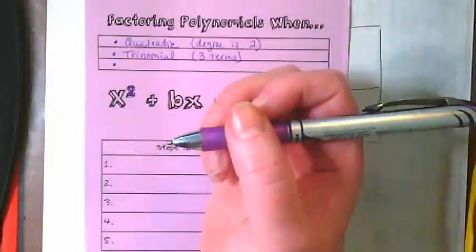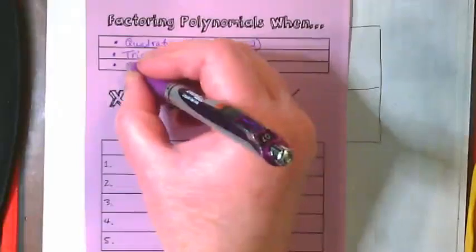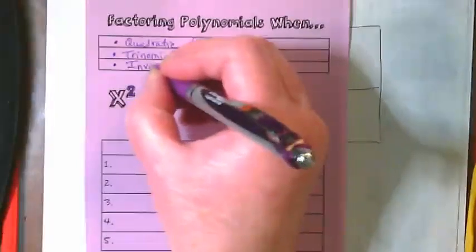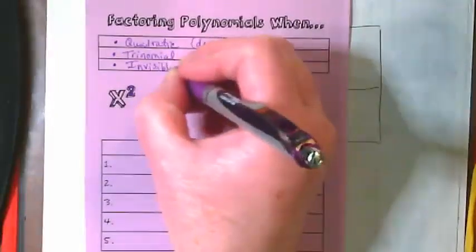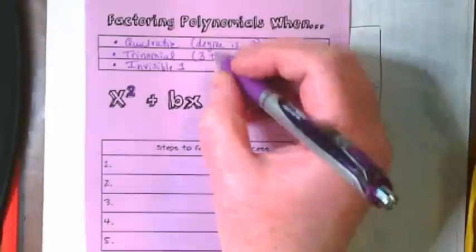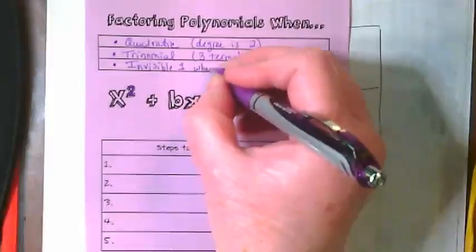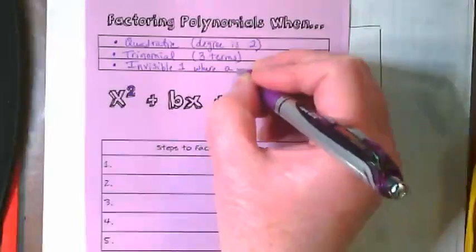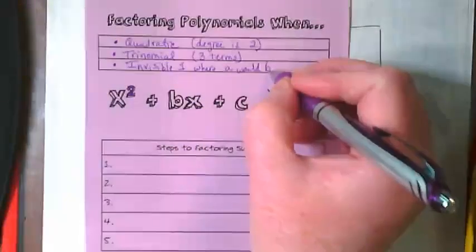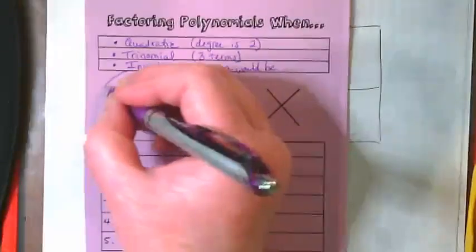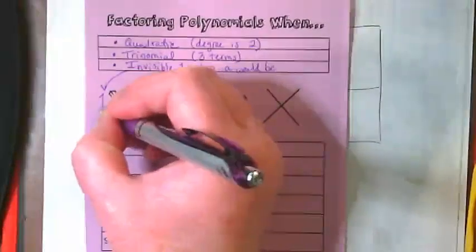And the final thing that's important in using this method is that we have an invisible one where the a would be, right here there's an invisible one.